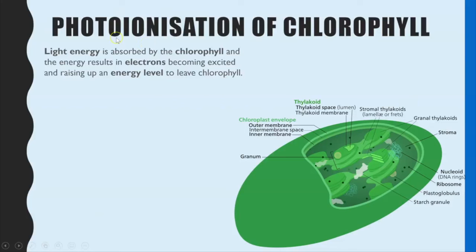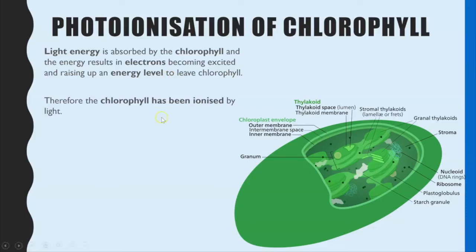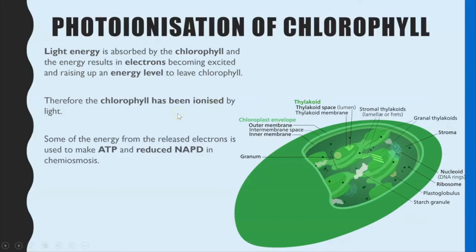Photoionization — the term 'photo' tells us it's to do with light energy, and ionization is the loss of an electron. So light energy is causing electrons to be lost from chlorophyll. The light energy is absorbed by the chlorophyll, the electrons gain that energy, they become excited — that's the phrase we use — they raise up an energy level and this causes them to break free and release themselves from the chlorophyll molecule.